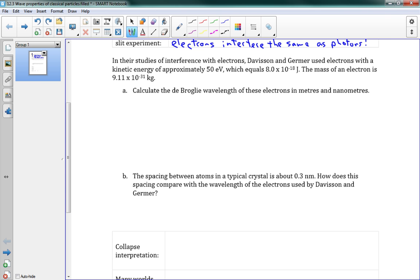In their studies of interference with electrons, Davison and Germer used electrons with a kinetic energy of approximately 50 electron volts, which equals 8.0 times 10 to the negative 18 joules. The mass of an electron is 9.11 times 10 to the negative 31 kilograms. First, we want to calculate the de Broglie wavelength of these electrons in meters and nanometers.